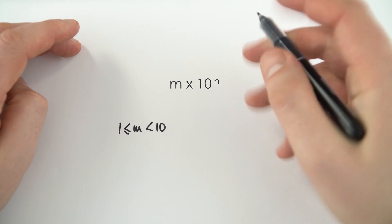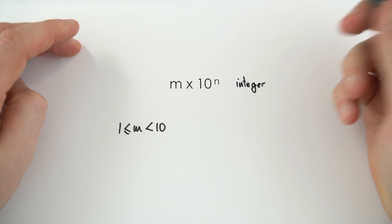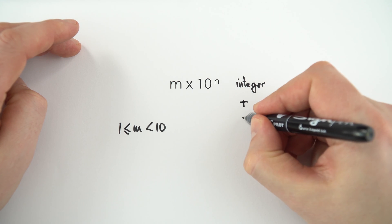The second number, n, well this is an integer, which just means it's a whole number, like 1, 2, 3 or 4, and it can also be both positive or negative.